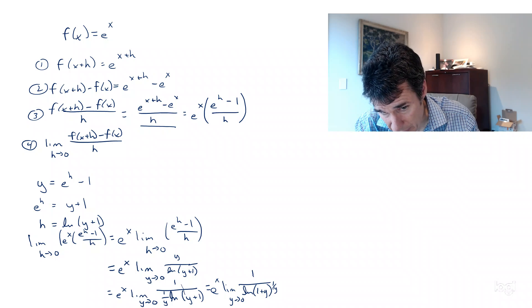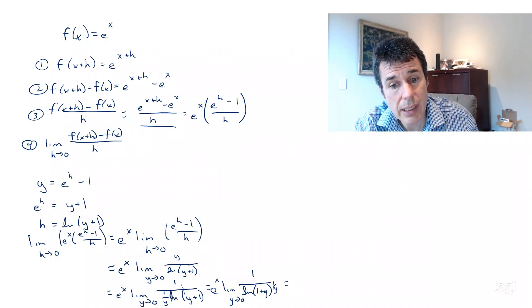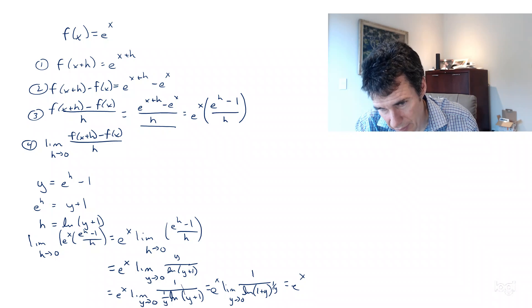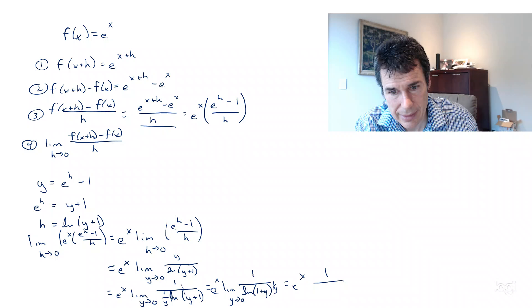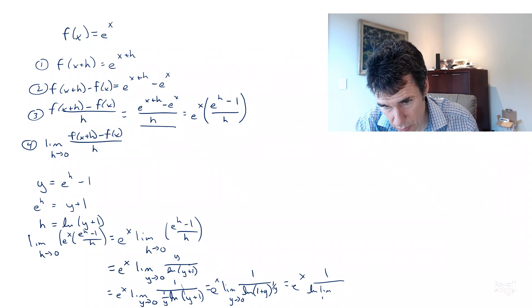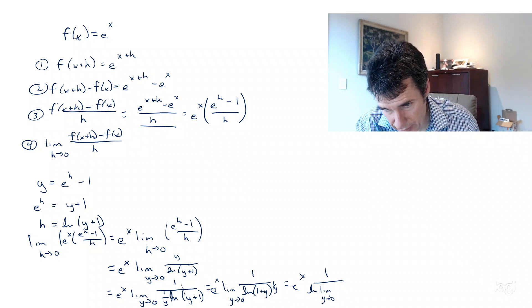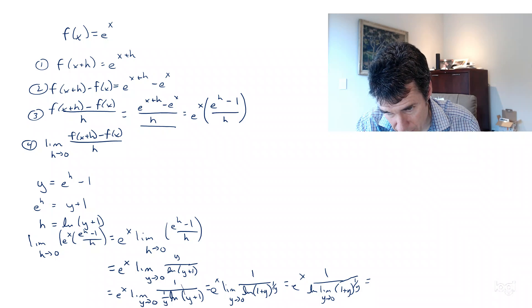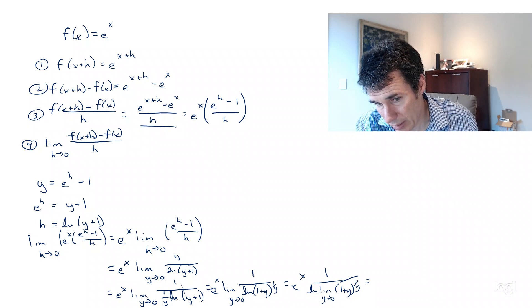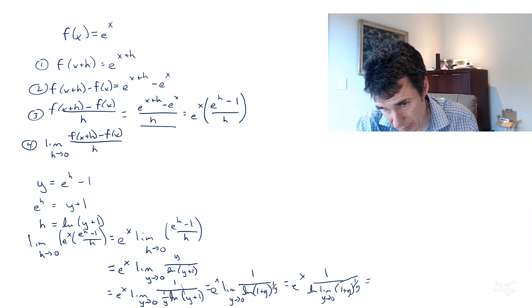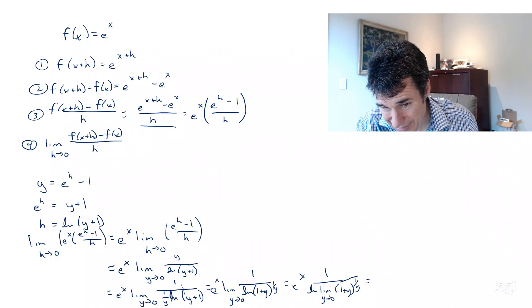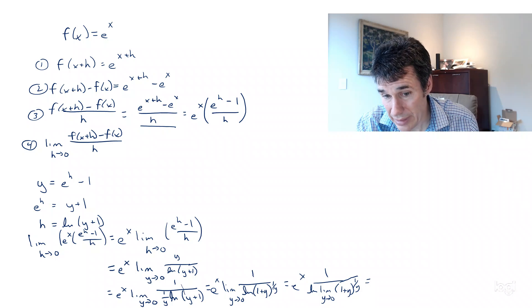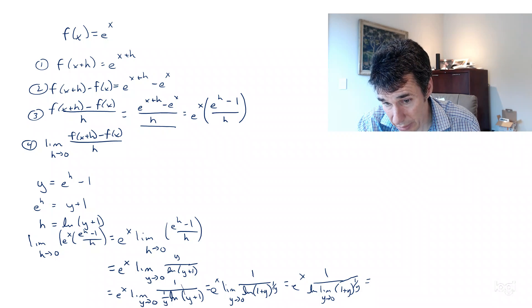This limit, we need to take it inside now: e^x · 1/ln[lim(y→0) (1+y)^(1/y)]. And now we can recognize this limit as y → 0 of this quantity is just e. Natural log of e is just 1, and so we end up with e^x times 1, which is just e^x.